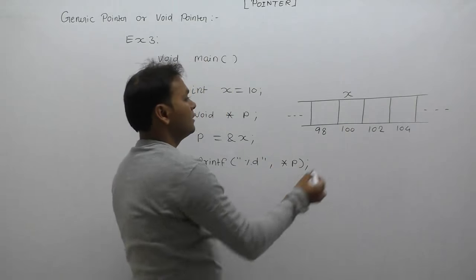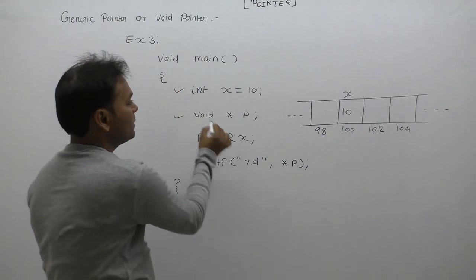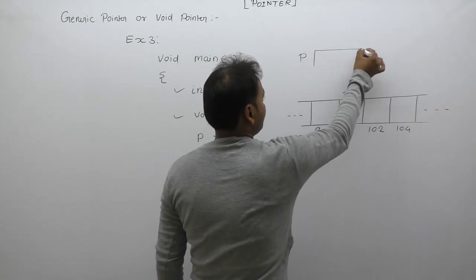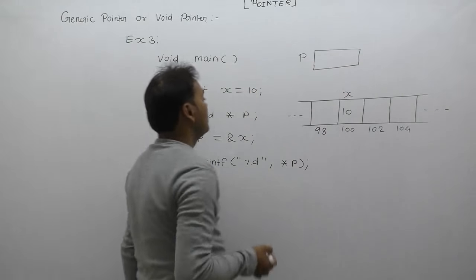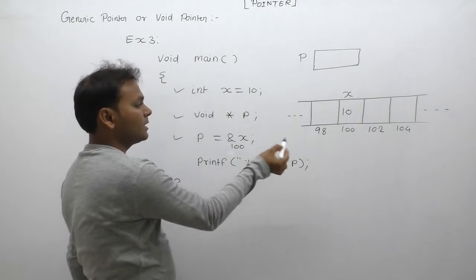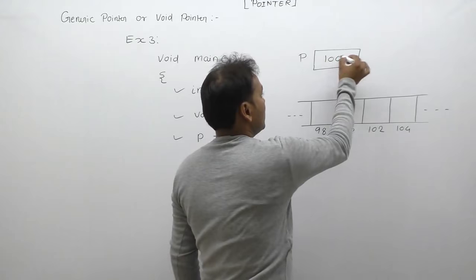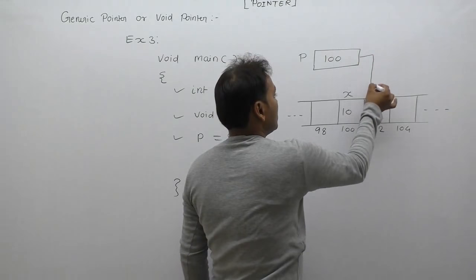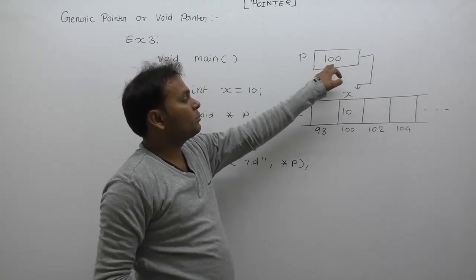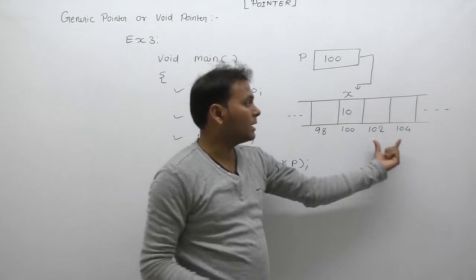After that we are creating pointer variable p. Pointer means create separate place. In this case, we are requesting address of x. According to the diagram, 100 is stored in p. One thing is clear: p's location points from 100 onwards, and all these bytes are available.